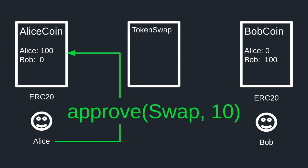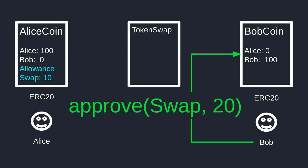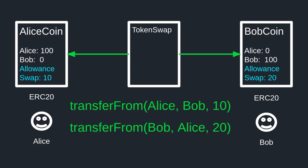Let's see how it works using the ERC20 functions approve and transferFrom. First, Alice will approve token swap to spend 10 of her tokens, so that the token swap contract is now allowed to withdraw 10 tokens from Alice. Bob would do the same thing on his side and approve the token swap to spend 20 of his tokens, so that token swap is allowed to withdraw 20 Bob coin from Bob. Now Alice and Bob are ready to finalize the trade, and either Alice or Bob can call the function swap — a function that we'll define later in Remix.